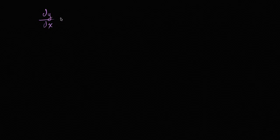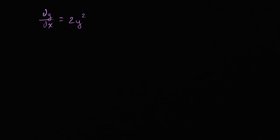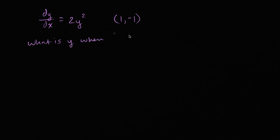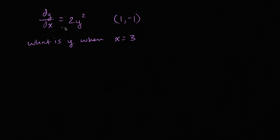Let's get some practice with separable differential equations. So let's say I have the differential equation: the derivative of y with respect to x is equal to two y squared. The graph of a particular solution passes through the point one comma negative one. What is y when x is equal to three, for this particular solution? I encourage you to pause the video and try to work through it on your own.